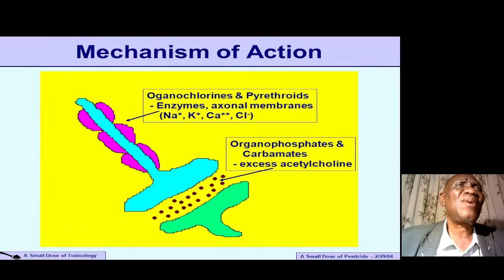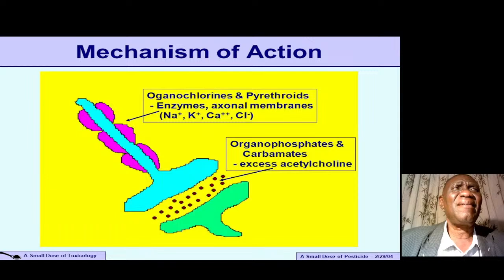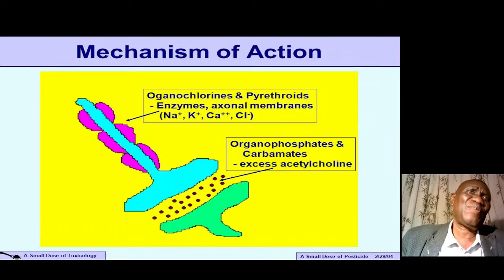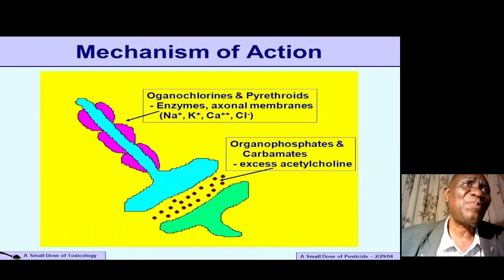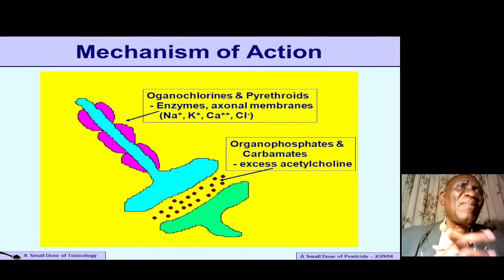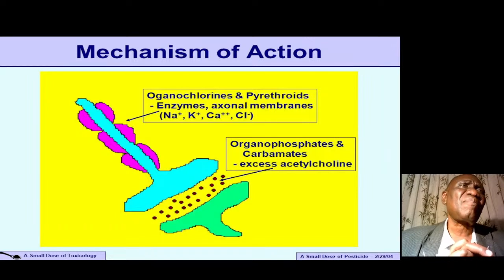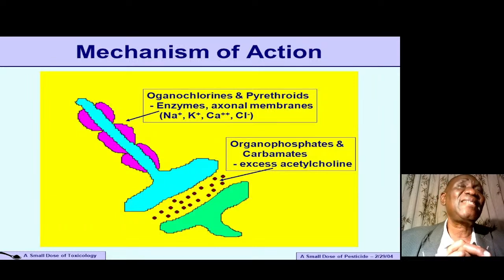In summary: organochlorines and pyrethroids affect nerve membranes, causing abnormal movement of sodium and potassium ions — and also calcium and chlorine. Organophosphates and carbamates affect the synaptic space of the nervous system through excess production of acetylcholine, which generates continuous signals that eventually kill the insect.